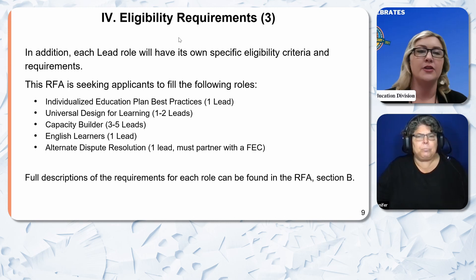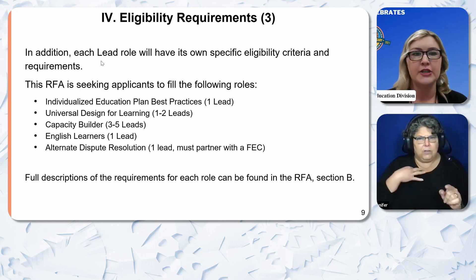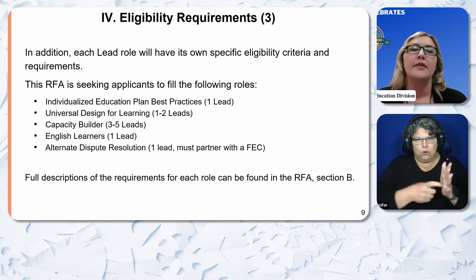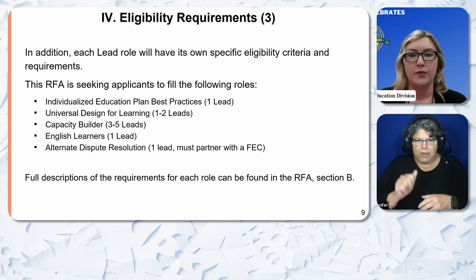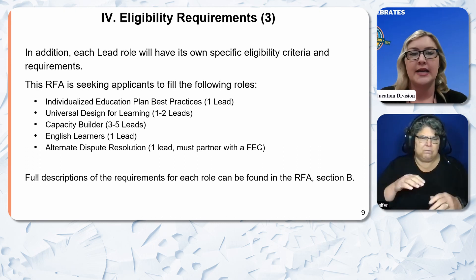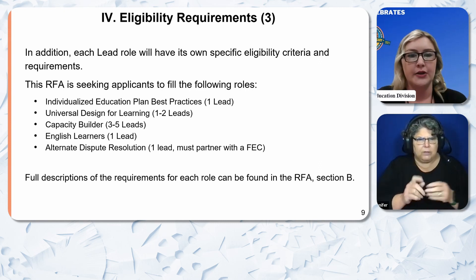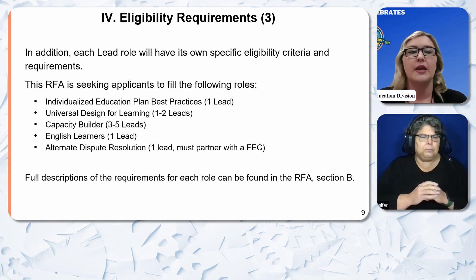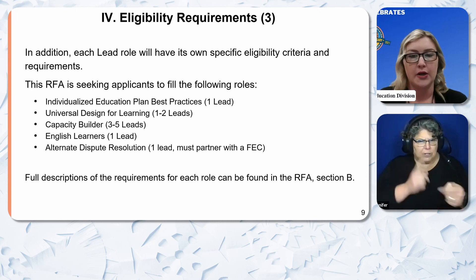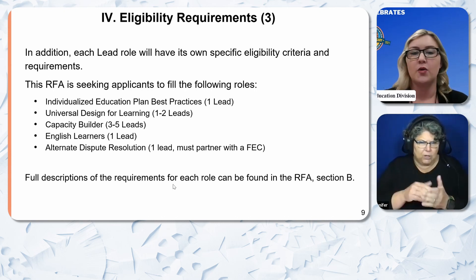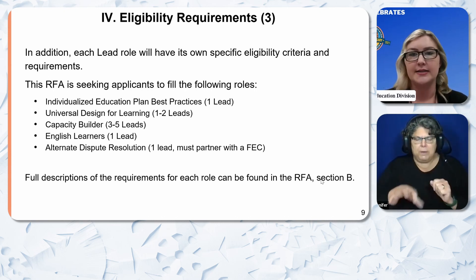In addition, each LEAD role will have its own specific eligibility criteria and requirements. This RFA is seeking applicants to fill the following roles: Individualized Education Plan Best Practices (1 LEAD), Universal Design for Learning (1-2 LEADs), Capacity Builder (3-5 LEADs), English Learners (1 LEAD), and Alternate Dispute Resolution (1 LEAD that must partner with a Family Empowerment Center). Full descriptions of the requirements for each role can be found in RFA Section B.3.